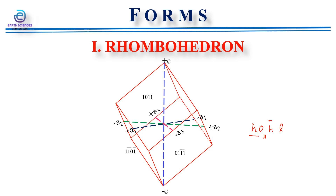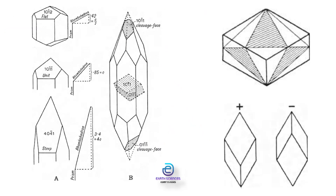From the figure it is clear that there are a number of rhombohedra possible for any given mineral. Rhombohedra that are flatter than the unit form have general symbols like (1 0 1̄ 2), and rhombohedra that are steeper than the unit form have symbols like (2 0 2̄ 1) or (3 0 3̄ 2), etc.